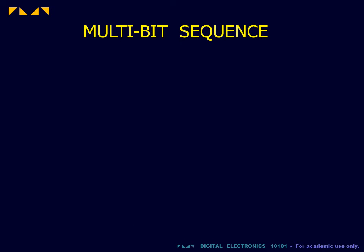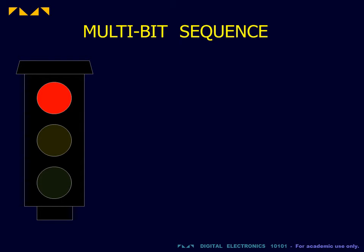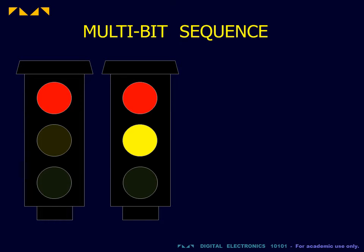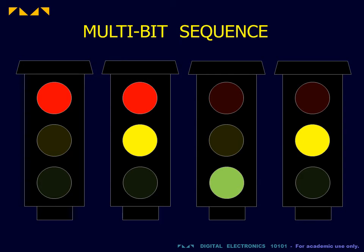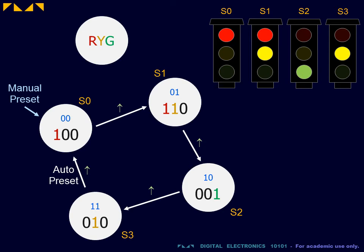We will once more illustrate using a repeating multi-bit traffic signal: red, red-yellow, green, yellow. The state diagram will contain the required output sequence as before. It will also contain the binary counting code for each state.